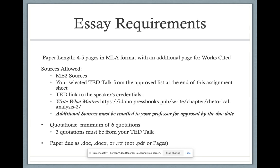Major Essay 3 has the same page length as our last essay, so it's four to five pages, MLA format with that additional page for Works Cited. The sources that are allowed for this essay are any that were approved for Major Essay 2, so you can reuse all of that information, your selected TED Talk, which will come from the approved list at the end of the assignment sheet, the TED Talk link to the speaker's credentials that you can find at the talk, and the Write What Matters press book available to you in the weekly folders.